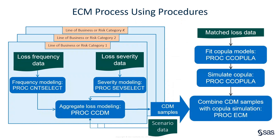This flowchart shows one possible process of modeling economic capital. First, for each business line, you use PROC CNT SELECT to model loss frequency and PROC SAVE SELECT to model loss magnitude. Second, you use PROC CCDM to model the aggregate losses of each business line by integrating models created by PROC CNT SELECT and PROC SAVE SELECT. PROC CCDM needs scenario data when the count or severity model uses regressors. While building models for each business line, you can use PROC CCOPULA to model the loss dependency structure across all business lines and simulate a joint probability sample from the best-fitting copula. Finally, PROC ECM combines CDM samples and copula simulations and estimates the distribution of the total loss.